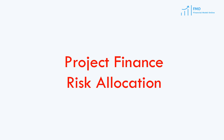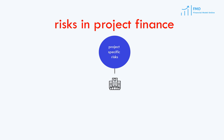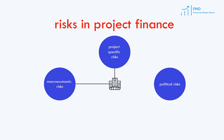As in any business venture, the project company in Project Finance faces four types of risks: Project Specific Risks, Macroeconomic Risks, Political Risks, and Natural Disaster Risks. It is the efficient and structured allocation of these risks to the parties most capable of managing them which makes project finance possible.